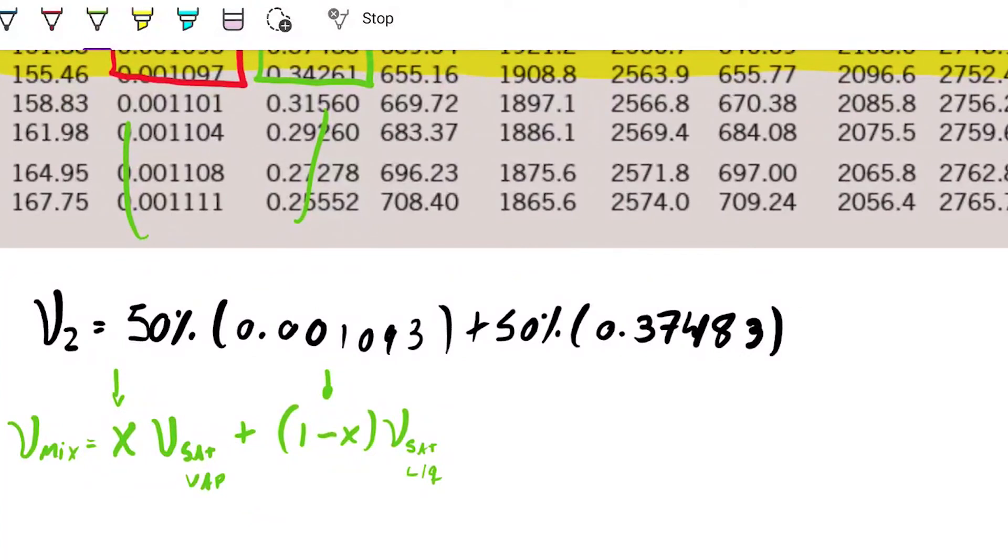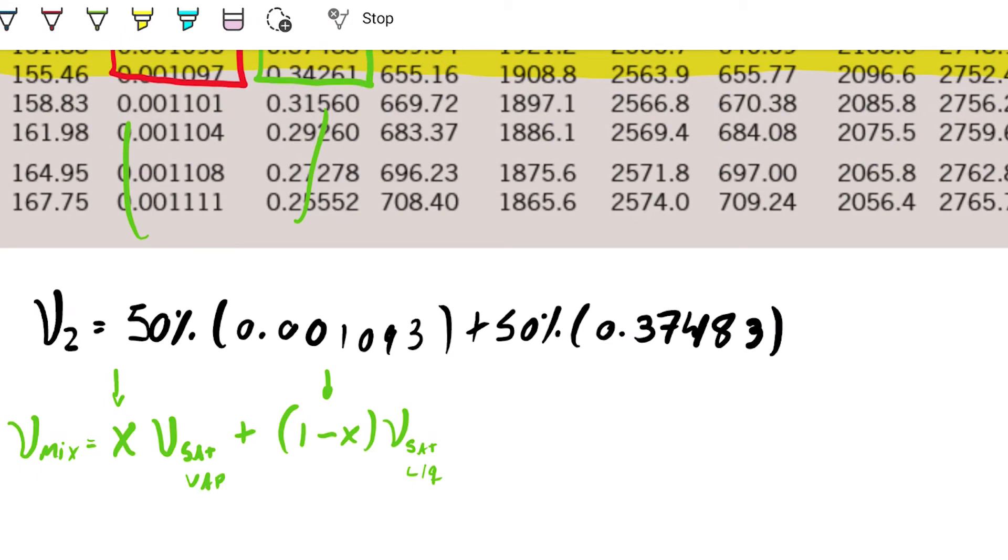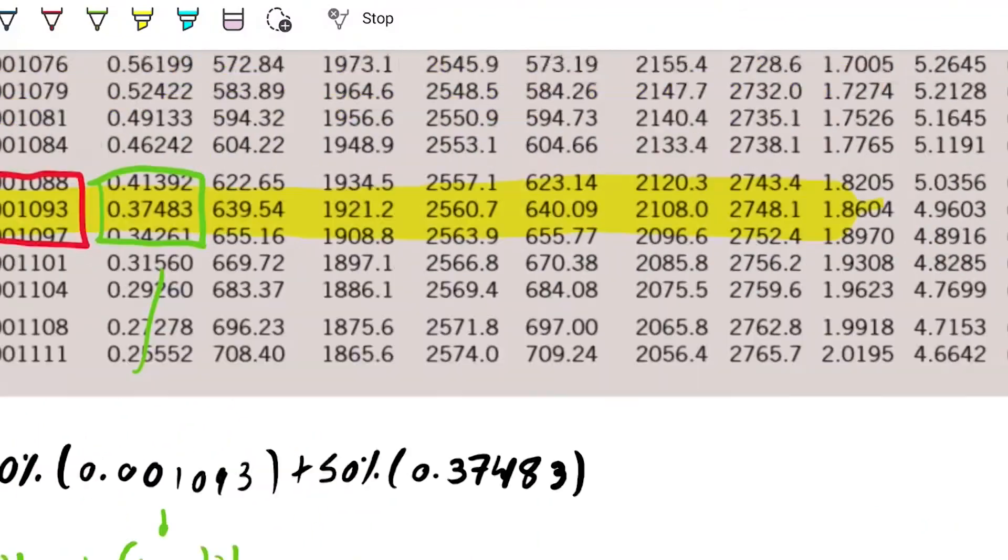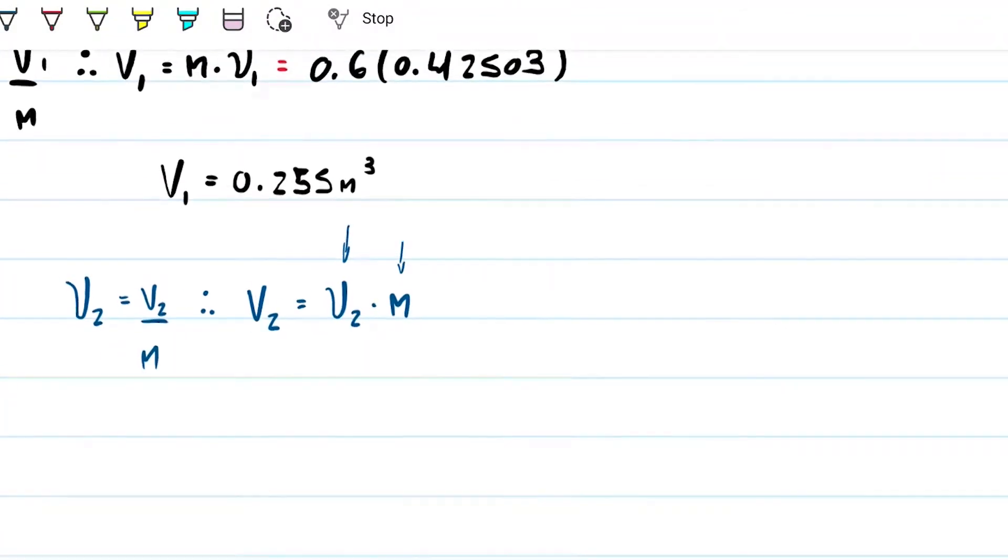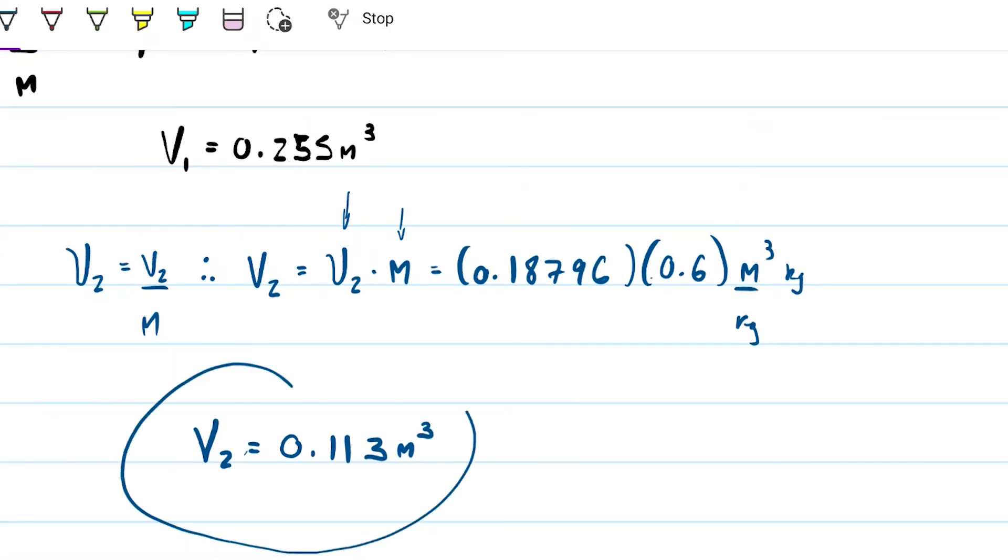So I got my specific volume to be about 0.1879. So let's just go back to where we were here. This is going to be my 0.1879 times 0.6 kilograms. I'm multiplying meters cubed per kilogram times kilograms. I'm getting out meters cubed as my final number. I'm calculating volume 2. And my volume 2 ends up being about 0.113. Remember that this guy has to be smaller than the other one, or else we did something wrong. And it is indeed. So 0.1 versus 0.2.